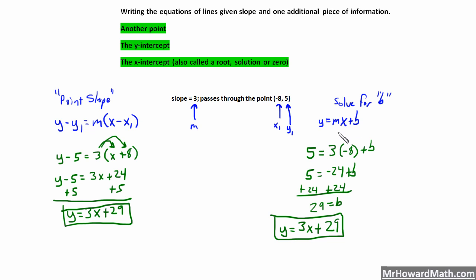My students have the most success using the solve-for-b method. Remember, once you find b and you have m, you can write the equation. This y equals mx plus b is the most powerful equation of a line because your slope and y-intercept are right there in the form.